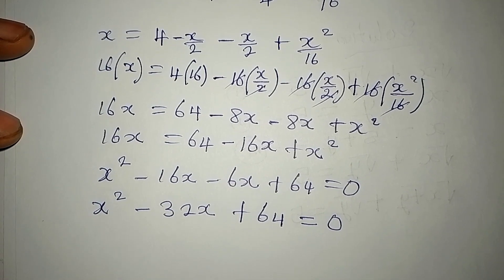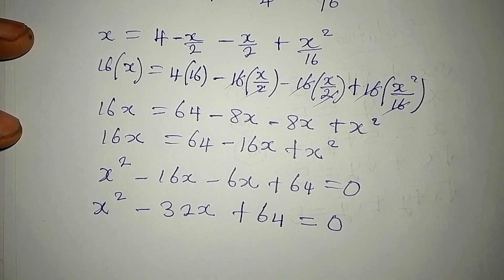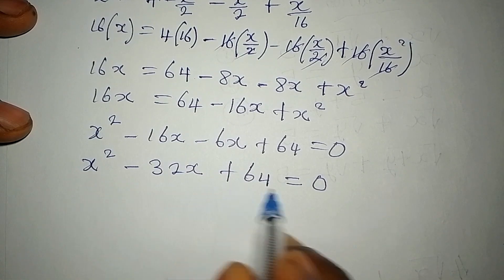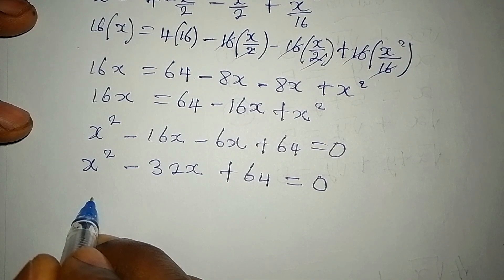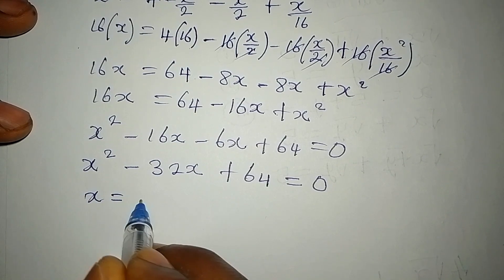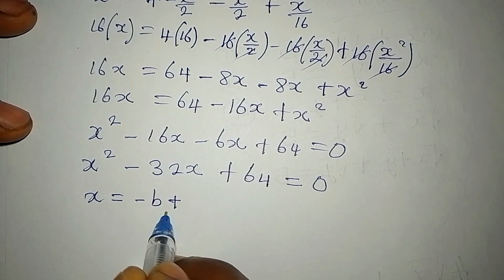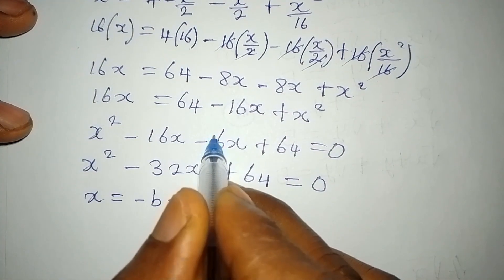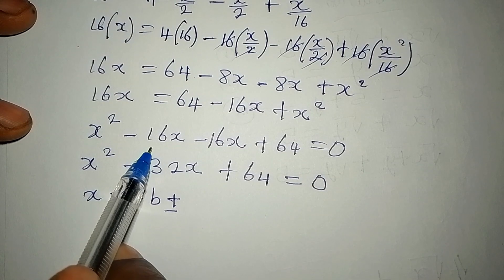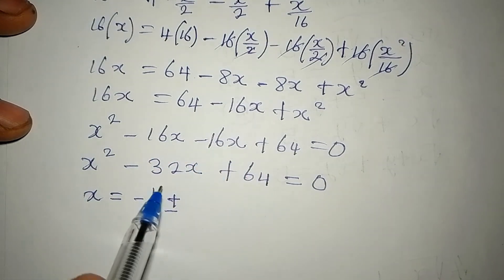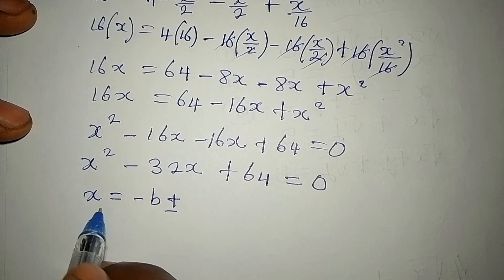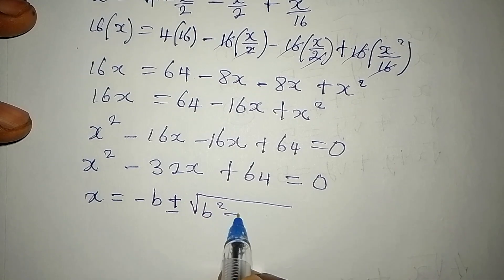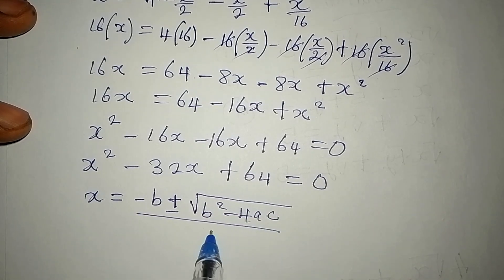So now we have a quadratic equation, and it's time to decide the method to use. From here, we will use the formula method. So that x will be equal to -b ± ... By the way, here is 16, and this is 16. So this has to be 16, not 6. So that -16x - 16x is giving us -32x. So the formula is x equals -b ± √(b² - 4ac) over 2 multiplied by a.